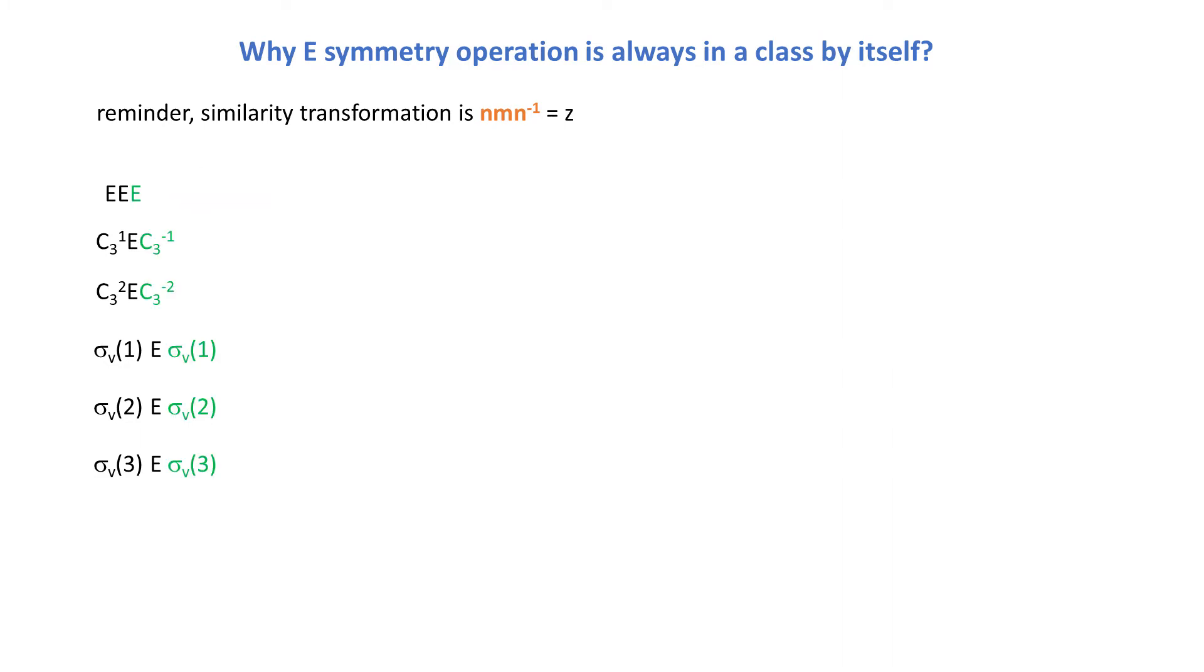Notice that the operation on the right has to be an inverse. And please recall that x dot inverse of x gives E, the identity element. So sigmas are their own inverse.